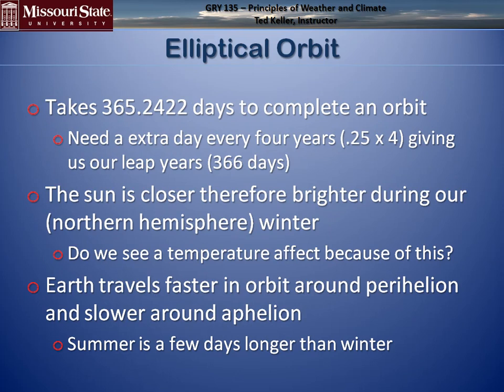It doesn't take exactly 365 days to complete this elliptical orbit — it's more like 0.25 extra days every year. That's why we have a leap year every four years, because 0.25 times four gives you one day that you have to add on.